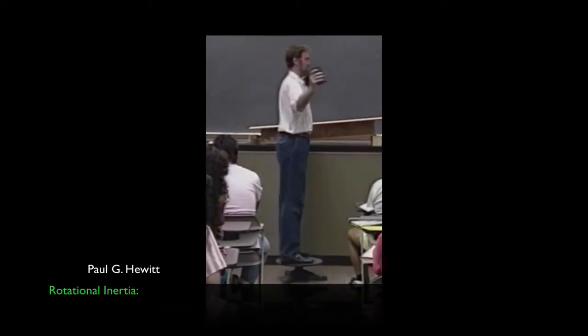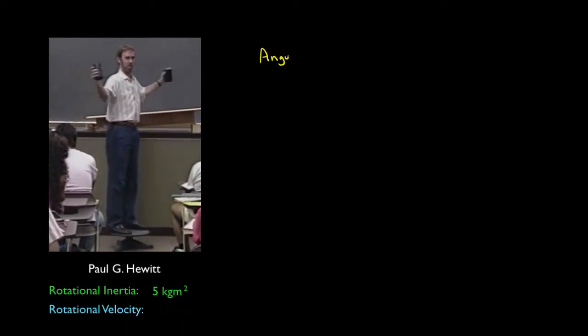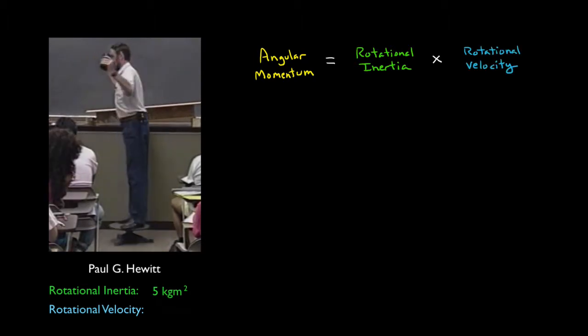Paul Hewitt is spinning around. Let's say that by holding out the weights, he has a rotational inertia of, say, 5. Multiply this by his rotational velocity, and you have his angular momentum.